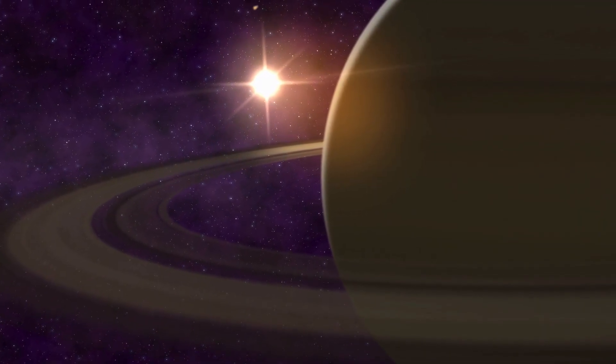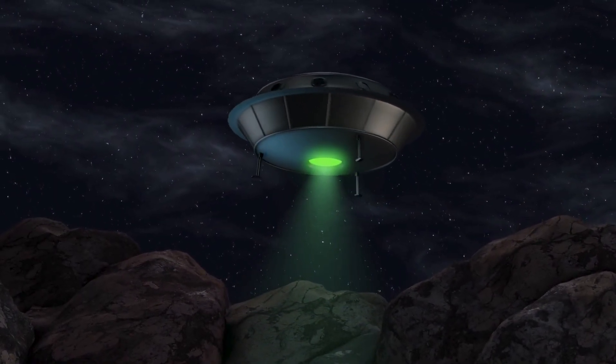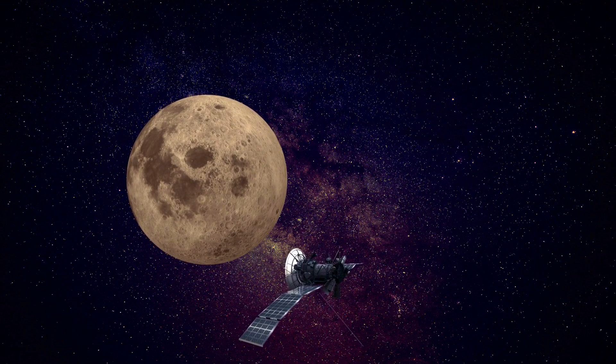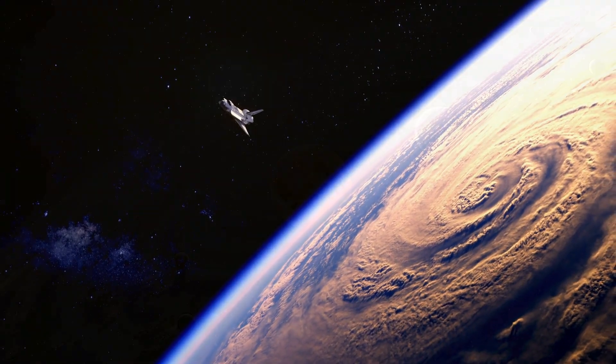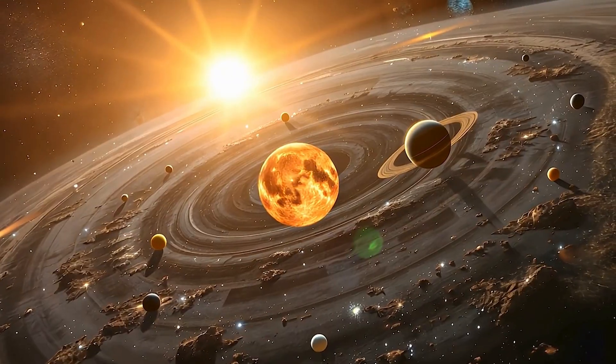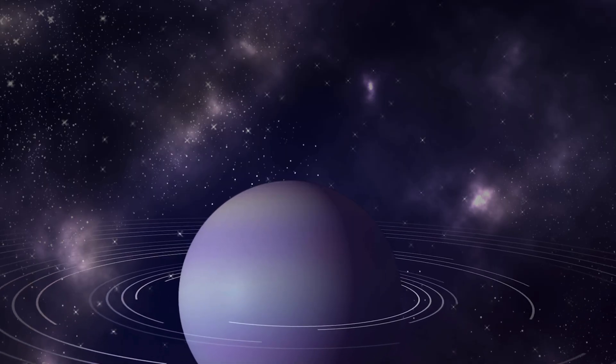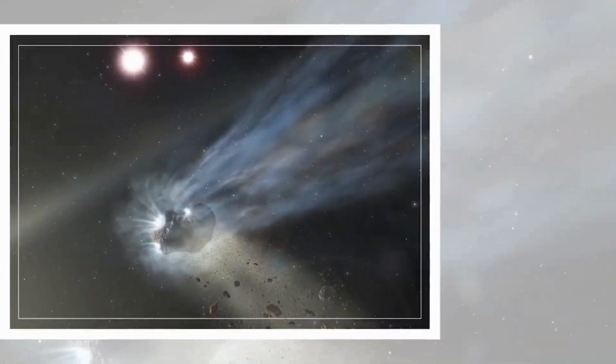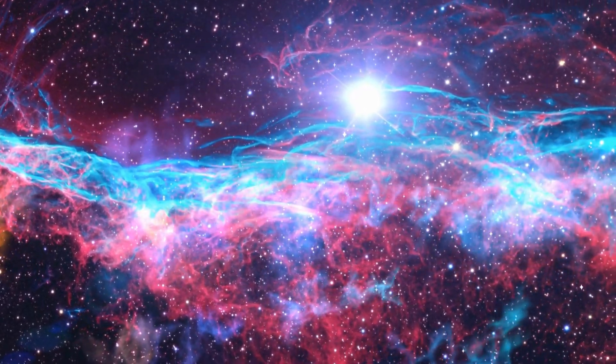Its speed, 68 kilometers per second, tells them it doesn't belong to our solar system. Objects born here move in gentle, predictable arcs, tethered to the sun's gravity. But 3I-Atlas? It's a bullet fired from another galaxy, cutting through our neighborhood with no regard for the rules. As it barrels toward the sun, it's set to swing past Mars on October 2nd, coming within 18 million miles of the red planet. Then, on October 30th, it will make its closest approach to the sun, a moment astronomers call perihelion.